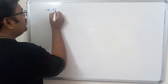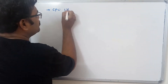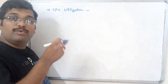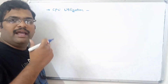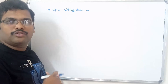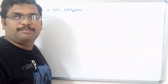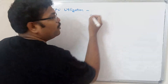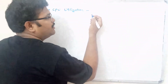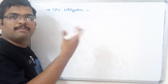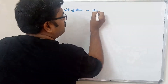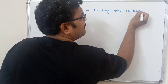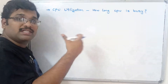The first scheduling criterion is CPU utilization. The name itself indicates it — CPU is the processor, and every process is executed by this CPU. CPU utilization means how long the CPU is being kept busy, i.e., how long some process is going on for execution by the CPU.